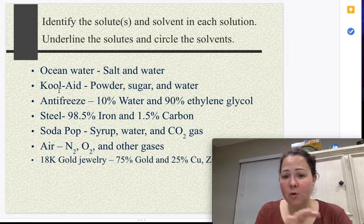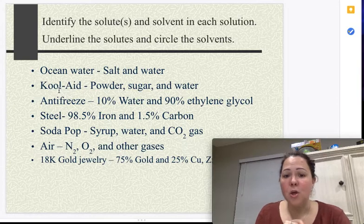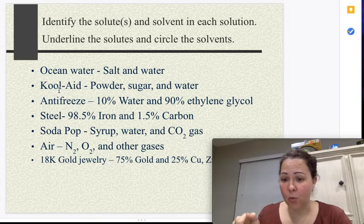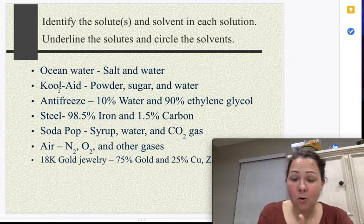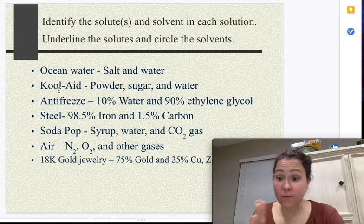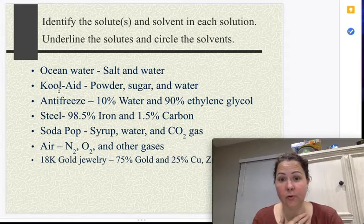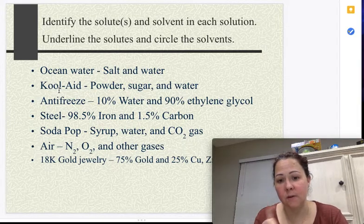When you're making Kool-Aid, you have the powder, you have the sugar, and you have the water. You put the powder and the sugar into the water and they dissolve away. So water is your solvent. The powder and the sugar, both of them, are both considered to be solutes. Remember, you can have more than one solute. There's only one solvent.